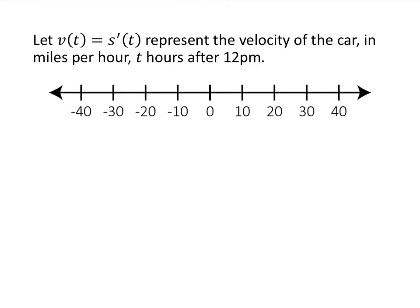Now let's bring the derivative into this. We're going to call this v of t, but it could also be called s prime of t — that's the derivative of position, and in this case we call that velocity. The units are going to be the change in y over the change in x, so the units for position are miles and the units for t are hours. That gives us miles per hour, which as you might expect gives us some indication of the speed of the car.